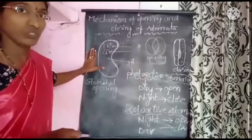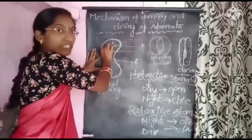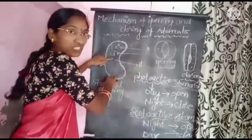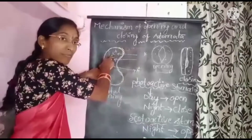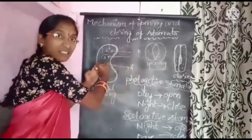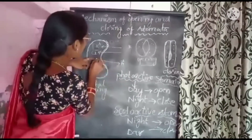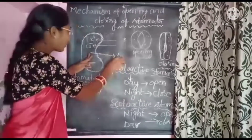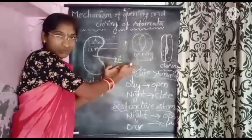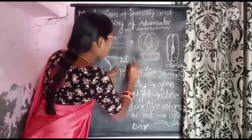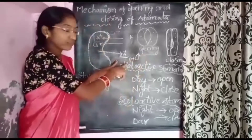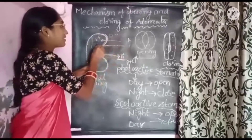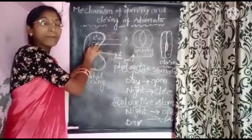Now let's check the opening mechanism. Accumulation of K+ ions into guard cells from surrounding subsidiary cells occurs, along with an efflux of H+ protons out of the guard cells. This causes pH to increase. Accumulation of K+ ions into guard cells is associated with Cl- ions also entering via passive transport.